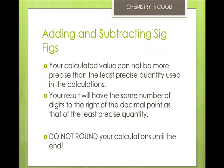Some rules for adding and subtracting significant figures. Number one, your calculated value can't be more precise than the least precise quantity used in the calculations. Two, your result will have the same number of digits to the right of the decimal point as that of the least precise quantity. Do not round your calculations until the end.